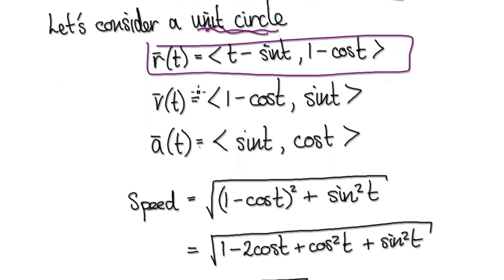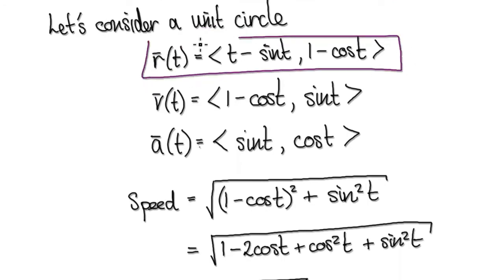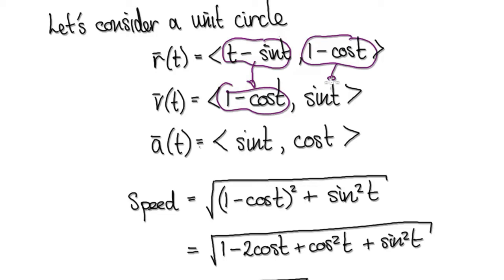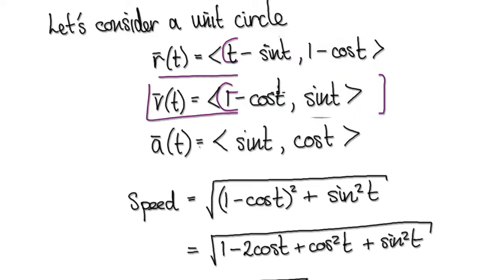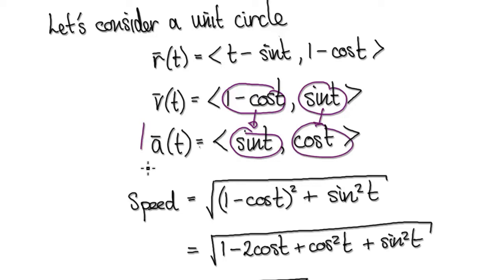The position vector of a unit cycloid is given by this. If you differentiate the components, it will give you the velocity vector. And then if you differentiate the components again, that will give you the acceleration.